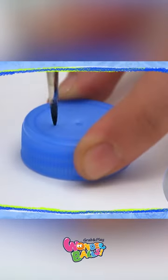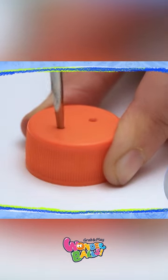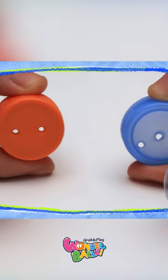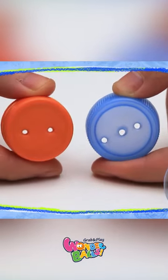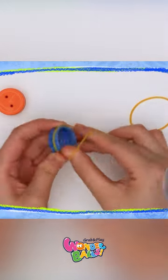Have your adult helper puncture some holes in a few different plastic bottle caps. They should look something like this. Now, wrap a rubber band around the side of each plastic cap.